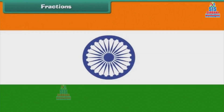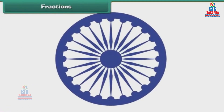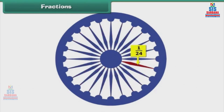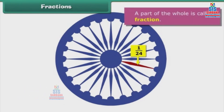Fractions. Consider the Ashoka Chakra. It has twenty-four spokes. The spokes divide the wheel into twenty-four equal parts. Each part is one by twenty-fourth of the whole wheel. A part of a whole is called a fraction.